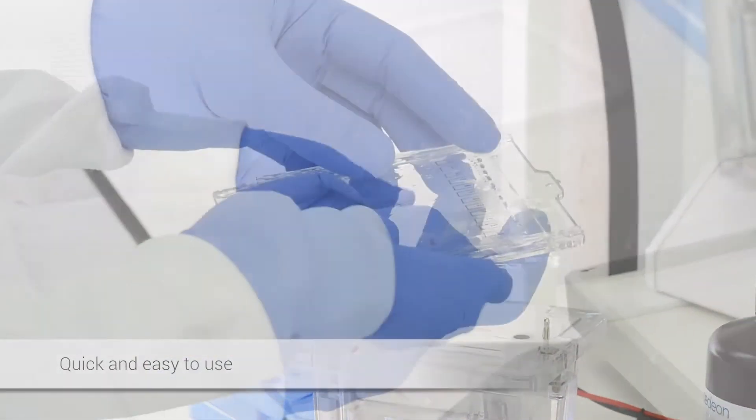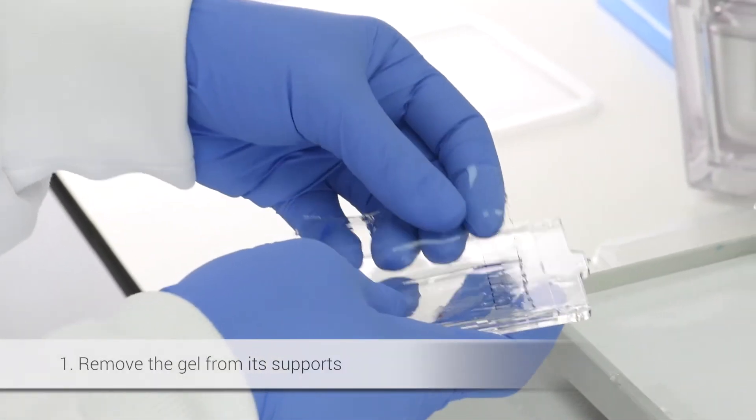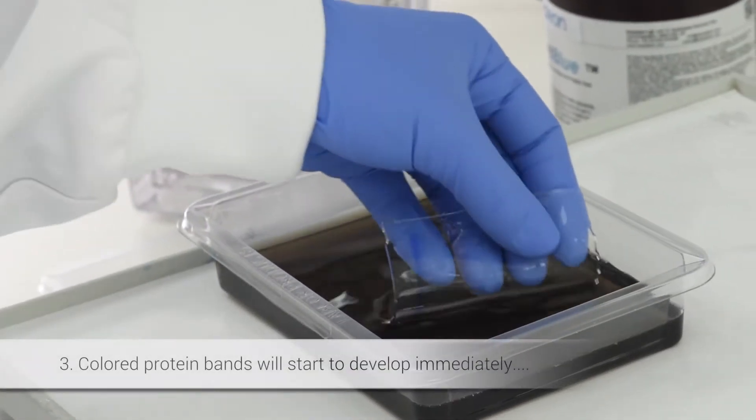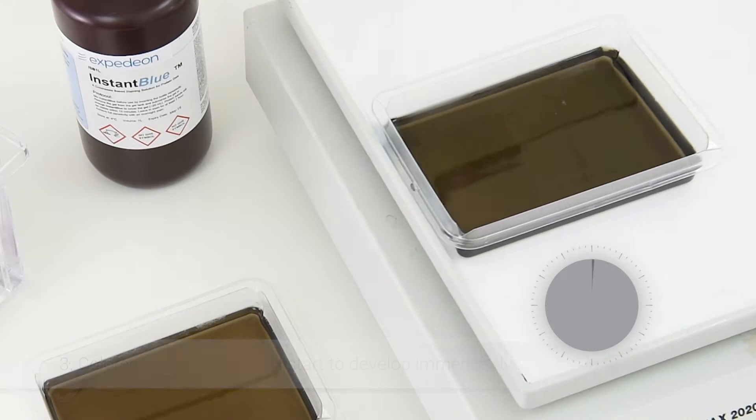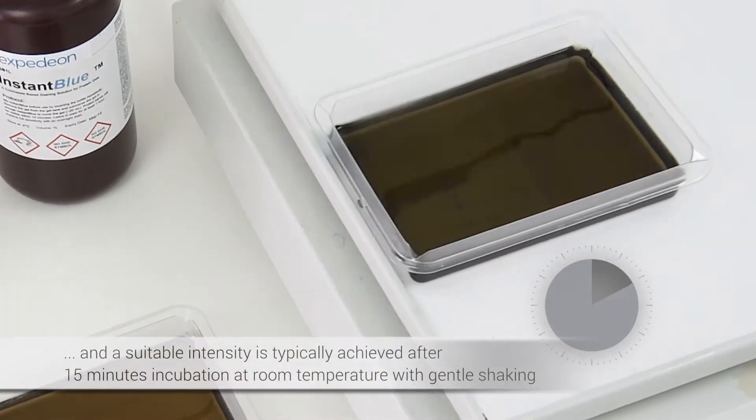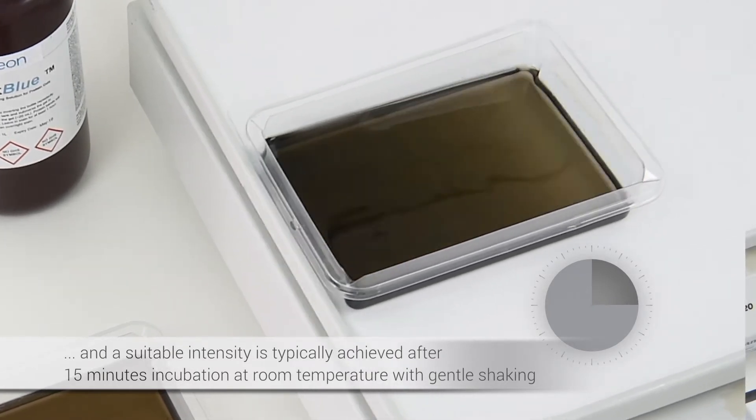InstantBlue is quick and easy to use. Remove the gel from its supports and add the gels to the InstantBlue solution. Colored protein bands will start to develop immediately, and a suitable intensity is typically achieved after 15 minutes incubation at room temperature with gentle shaking.